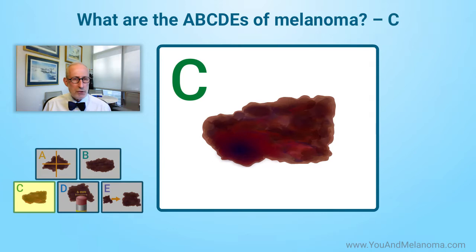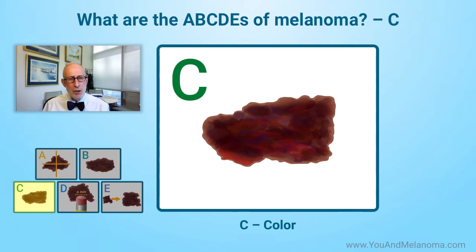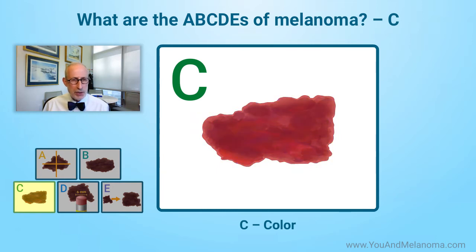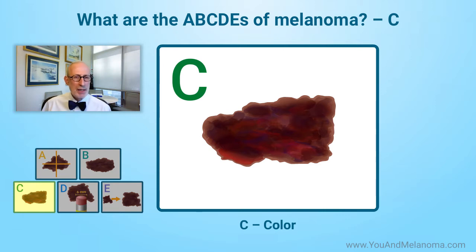C is for coloration. Most moles are kind of pale brown or pinkish. When they develop different coloration — dark brown, light brown, black, literally black, bluish tint, reddish tint, or so-called variegation, meaning multiple colors in the same mole — that's when you begin to get worried.